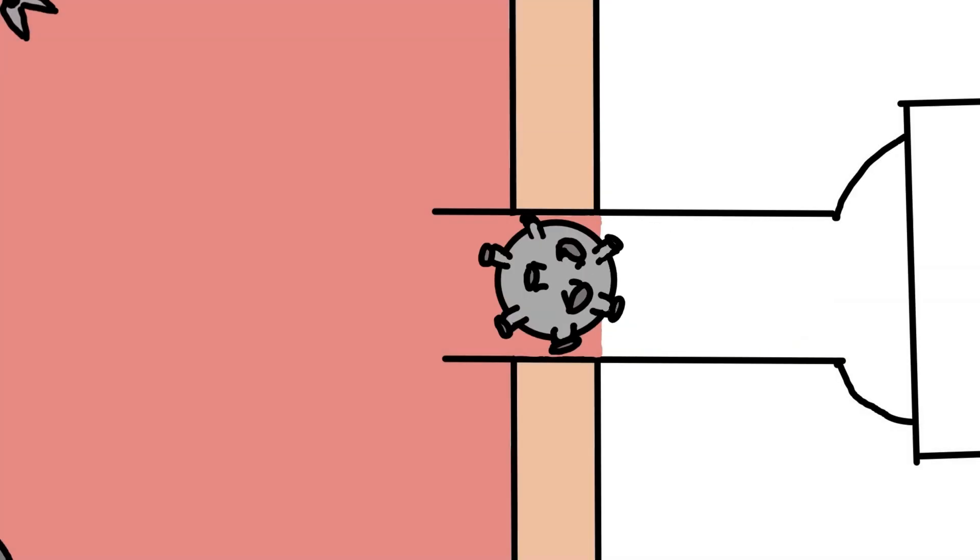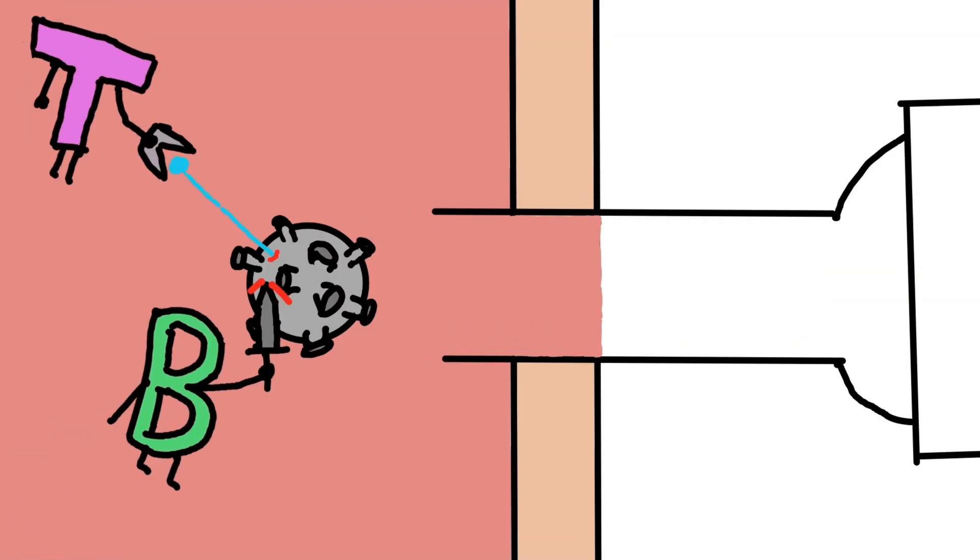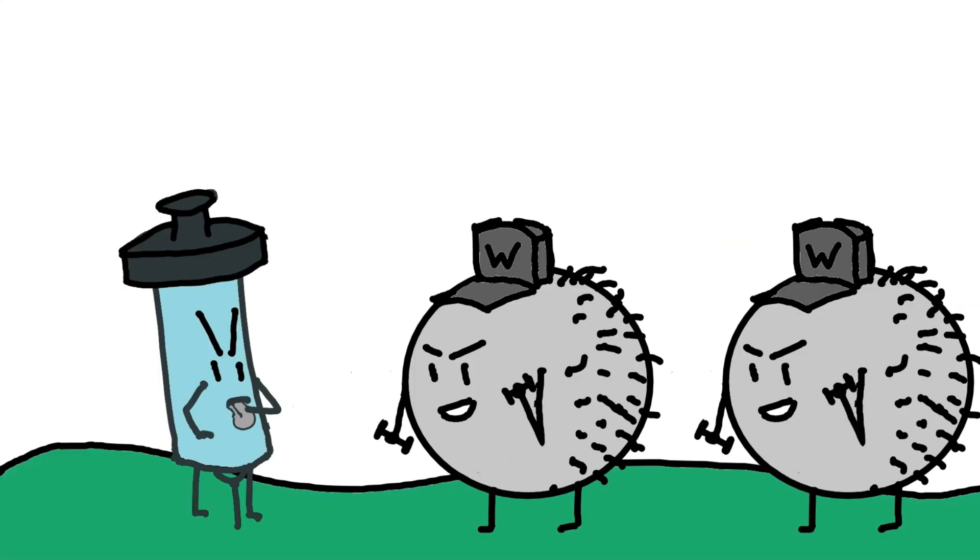Vaccines give your immune system a preview of the virus. They contain a weakened, inactivated, or just a small piece of the virus—enough to train your immune system without causing illness. So when the real virus shows up later, your immune system already knows what to do. That's why vaccines are so effective.